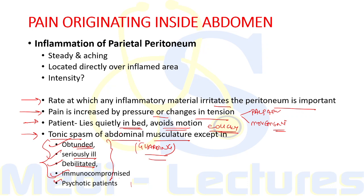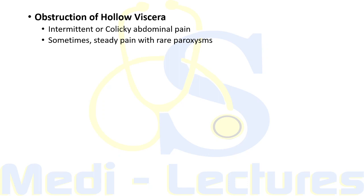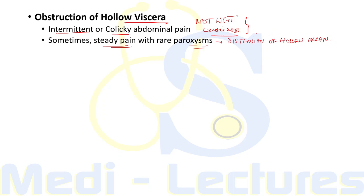Pain due to obstruction of hollow viscera classically elicits intermittent or colicky abdominal pain that is not well localized, in contrast to peritoneal inflammation pain. However, steady pain with rare paroxysms can also occur when there is distension of the proximal hollow organ after obstruction — converting from colicky to steady pain.